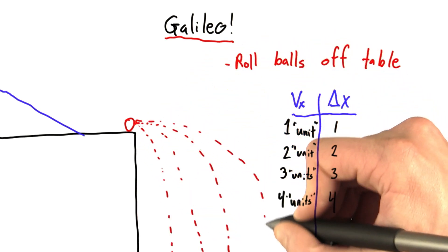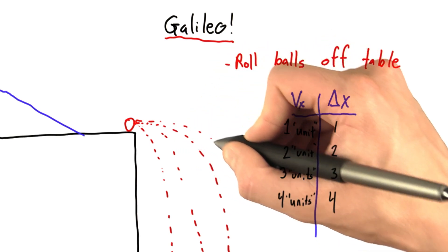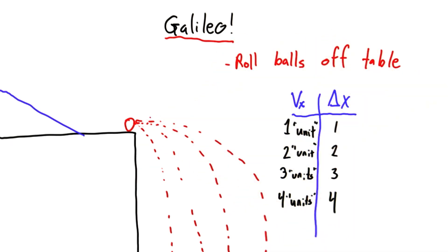With a velocity of two units, the ball went twice as far. Likewise with three and four units of initial horizontal velocity.